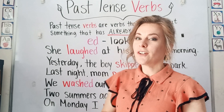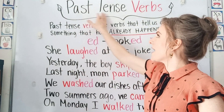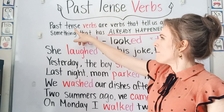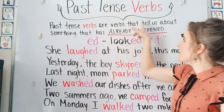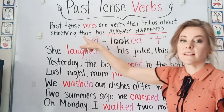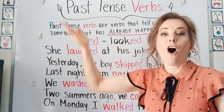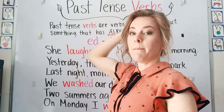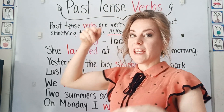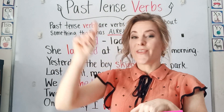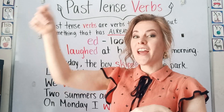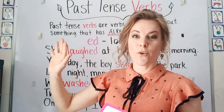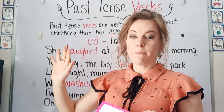Hello, students. Today we're going to look at some more past tense verbs. A past tense verb tells us about something that has already happened. It's happened in the past — it's not now, it's not in the future. It's happened in the past, and it's done, and it's over with.